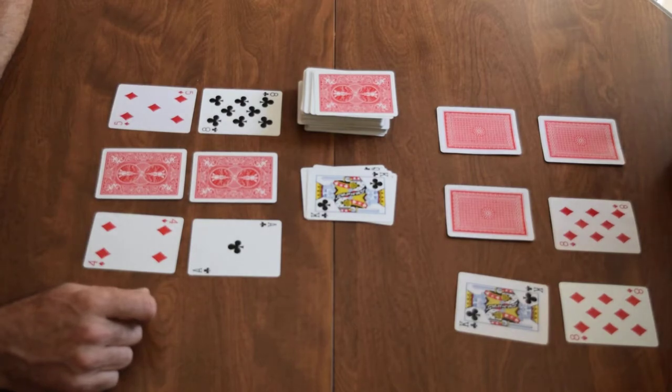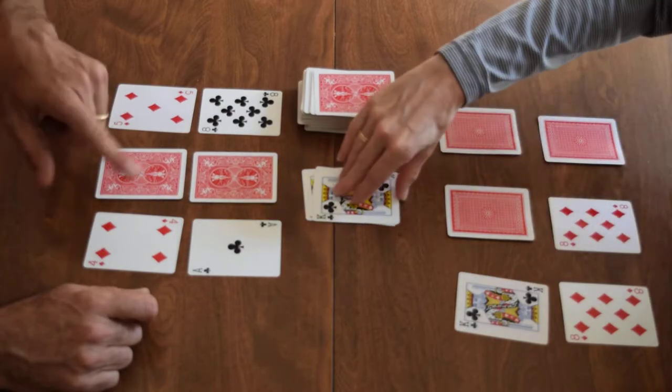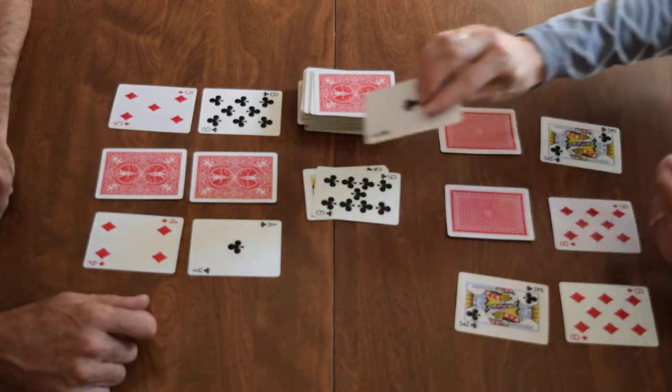Kings are worth zero, and jacks are worth negative five. All cards can also cancel each other out.